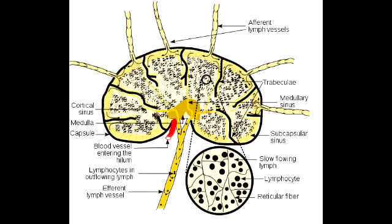Each lymph node will have an artery and a vein. To remember the layers from superficial to deep: the capsule first, followed by the subcapsular sinus, followed by the follicle of the cortex, then the paracortex, and then the medullary cords and the medullary sinus.